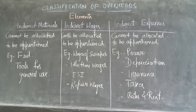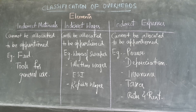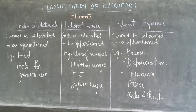Indirect materials cannot be allocated to a single department. It needs to be apportioned — meaning divided based on some proportion. You cannot allocate it to one particular department; you need to apportion it on a proportional basis. Examples of indirect materials are fuel and tools for general use.